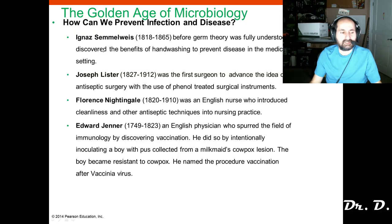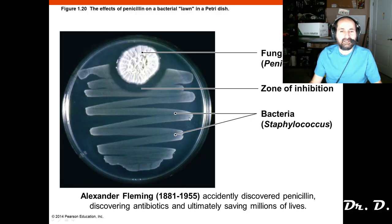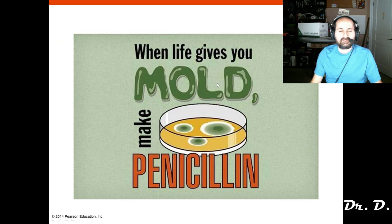You should know the contributions of Ignaz Semmelweis, Lister, Nightingale, and Jenner. You should also know that vaccines do not cause autism and that vaccines are a very strong net positive for humanity. Alexander Fleming discovered penicillin quite accidentally when he got some Penicillium mold growing on a dish, and that dish seemed to inhibit bacterial growth.